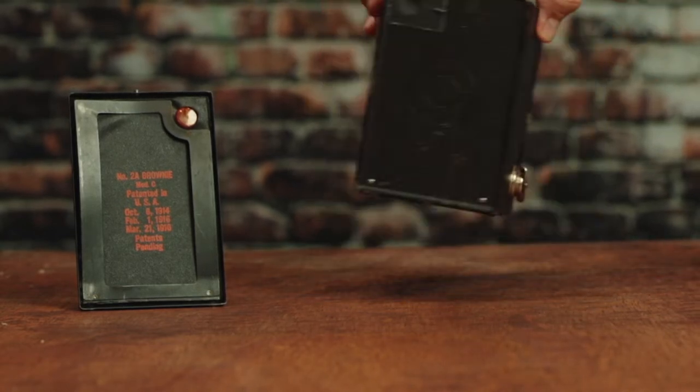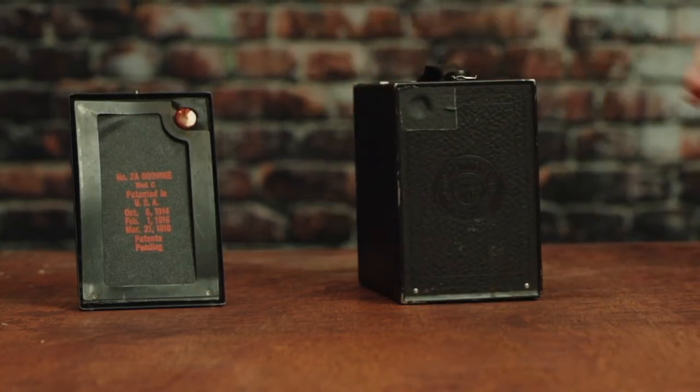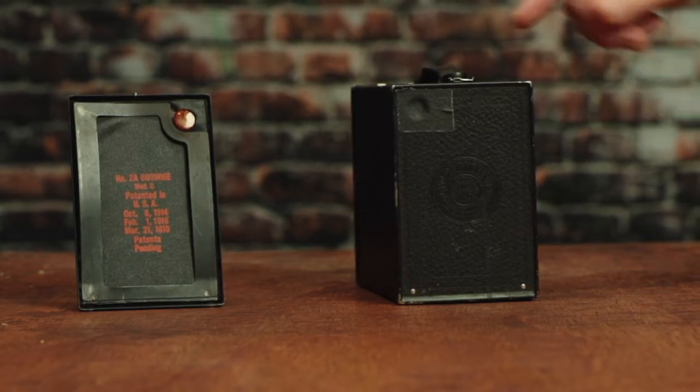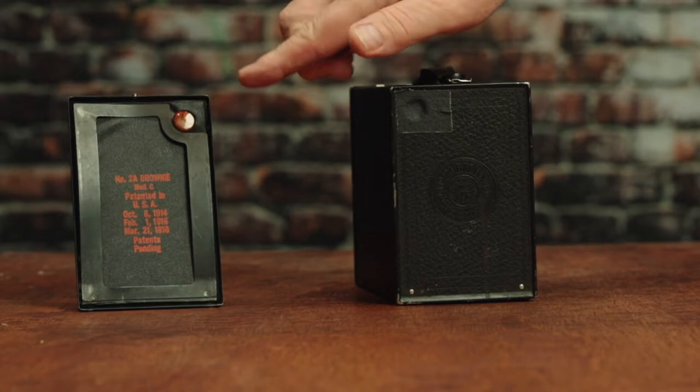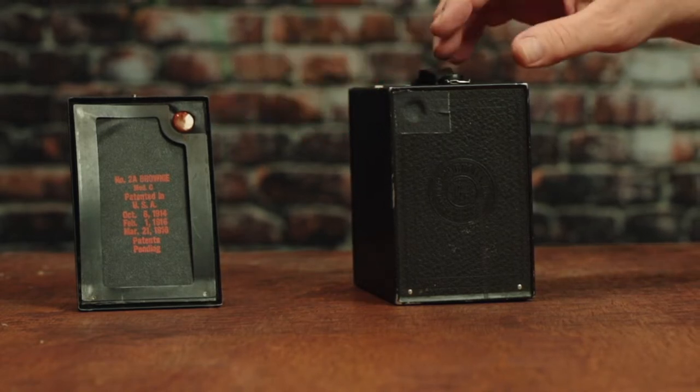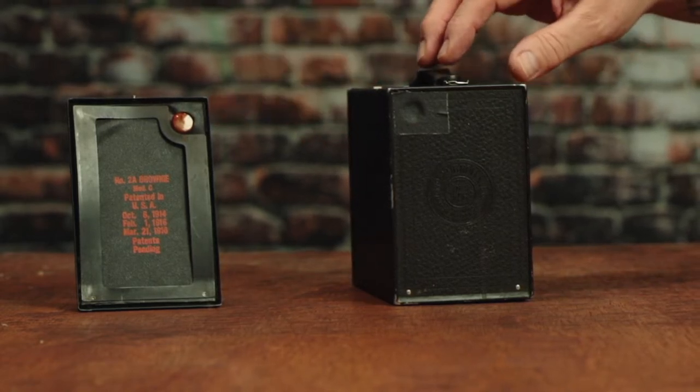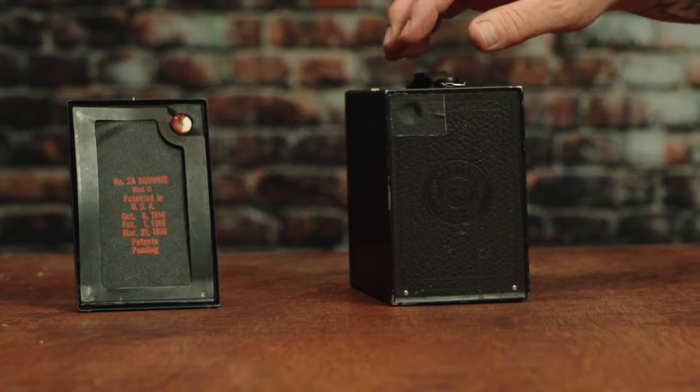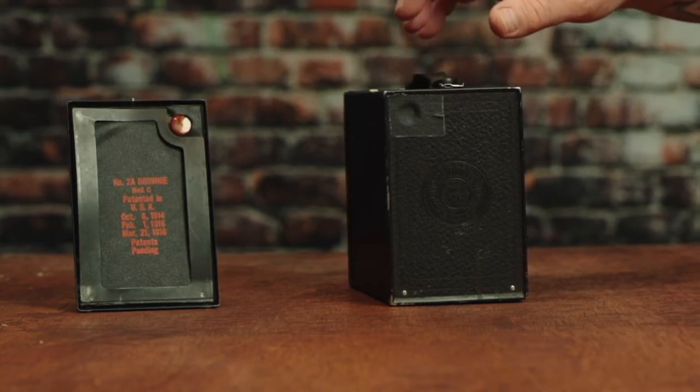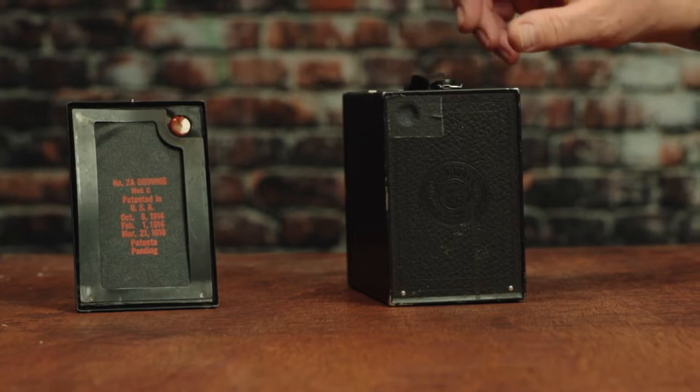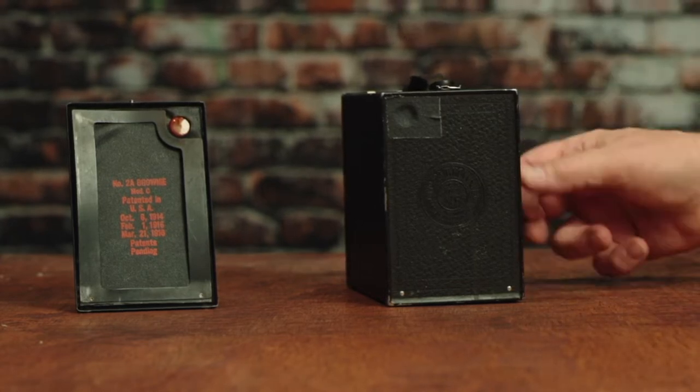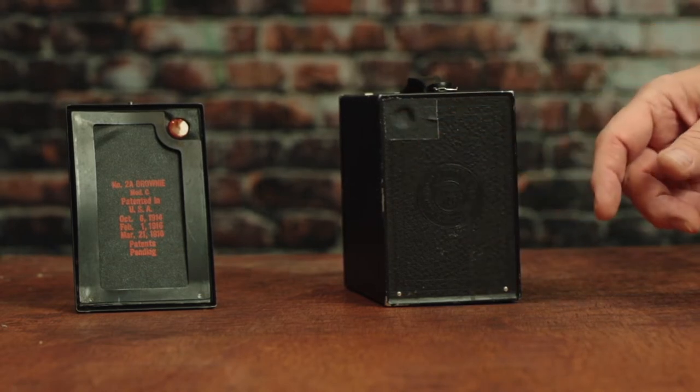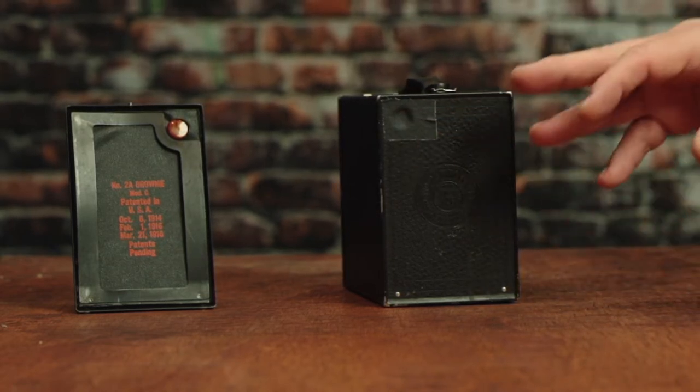So what we're going to do is turn this around and have a look at the back of this camera. The first thing you'll notice is that this other back I have over here has a little window with an orange gel inside of it. That orange window was for the original film and it was to tell you what number on the roll of film you were at. So you would advance the film until you saw the number. You'd see a 1, and then when you had taken that shot, you'd roll it till you saw a 2.